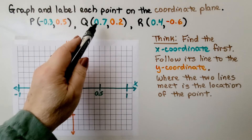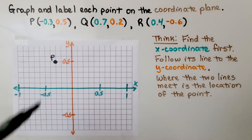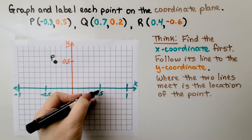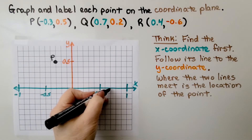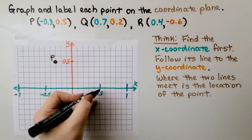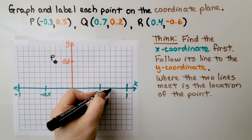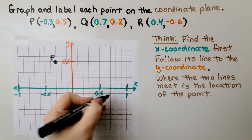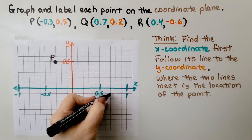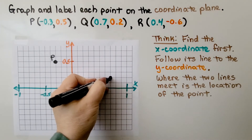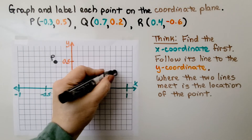For Point Q at positive seven-tenths for x, we go right from the origin. Five-tenths is marked, then six-tenths, then seven-tenths. The y value is positive two-tenths. Since five-tenths is visible, we can count up to two-tenths from the origin. That's Point Q.